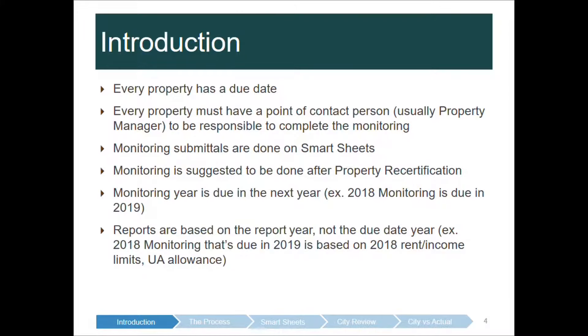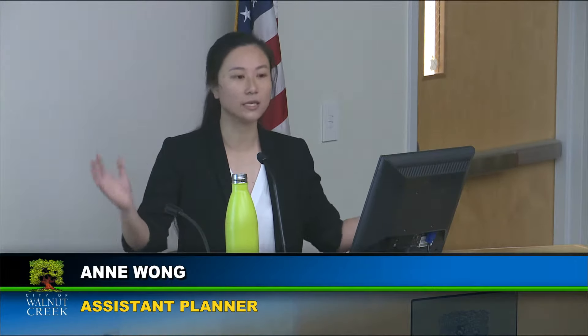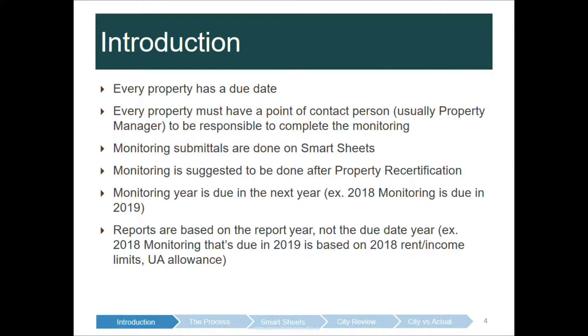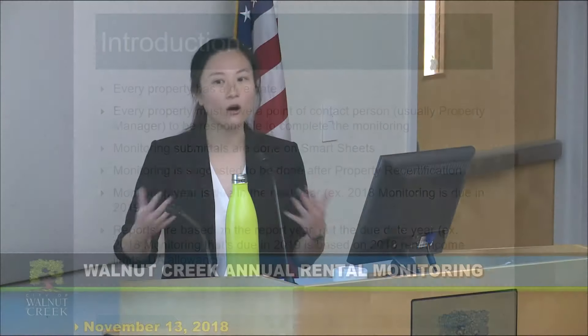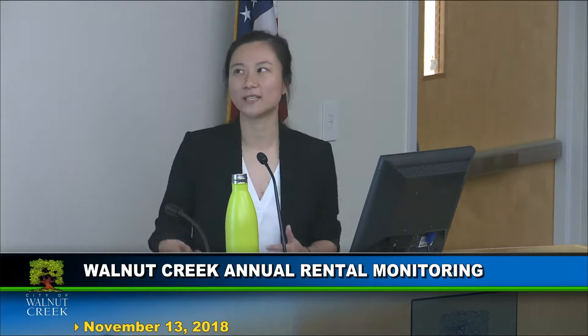The monitoring year is always due the next year. We do this because we have 18 properties in Warner Creek and every property has a different due date, so we give the entire year for properties to compile all their 2018 information. For example, a property's annual monitoring due date could be December 31st, so we give that property the entire year — that's why all due dates fall in 2019. Reports are based on the report year, not the due date year, so the 2018 monitoring is due in 2019 and all information is based on 2018.